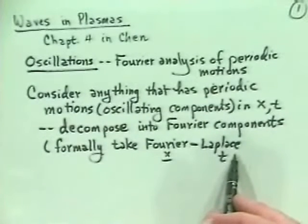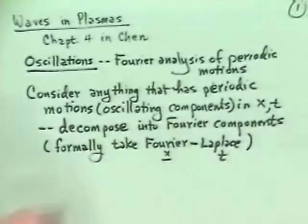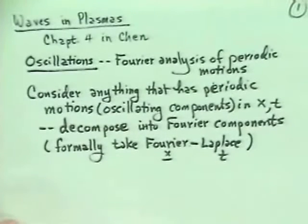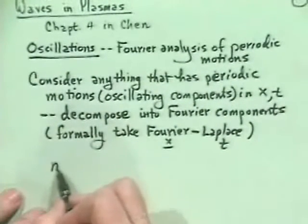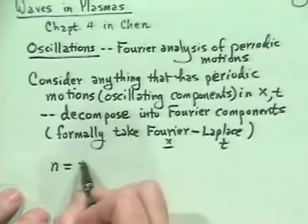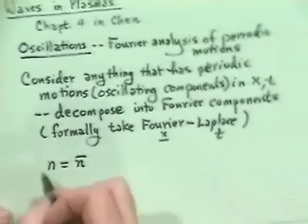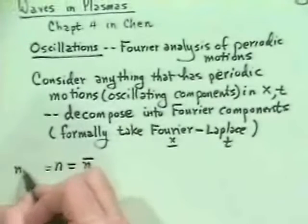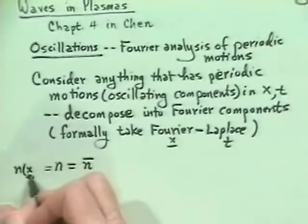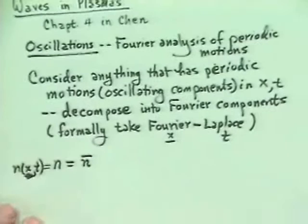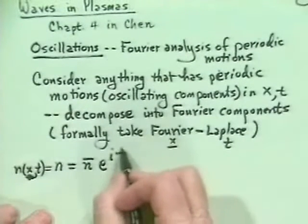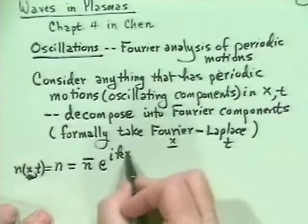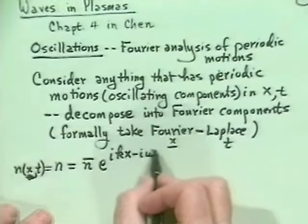We take Fourier transforms in space because we have in mind infinite homogeneous media, and Laplace transforms in time because we have in mind time starting at some particular point and going forward. But for the moment we just want to get a flavor for how things work, so we'll imagine we have one wave and say that the density n(x,t) is just some average value times e^(ikx - iωt).